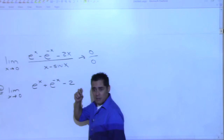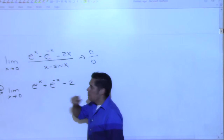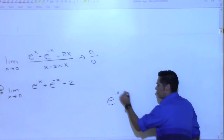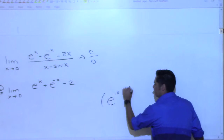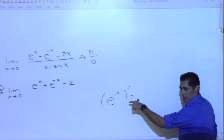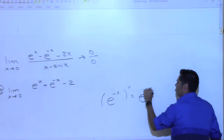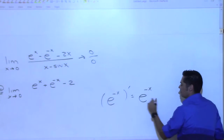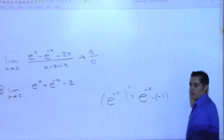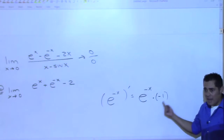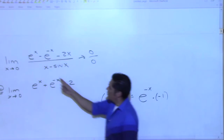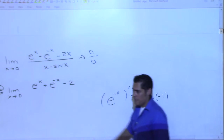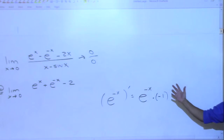Did you all see why? When you're taking the derivative of e to the negative x, you get itself, right? But then you have to take the derivative of what's up here — the exponent. The derivative of negative x is negative one, and that negative one comes out and changes the negative to a positive. And then minus two — we all good with that?